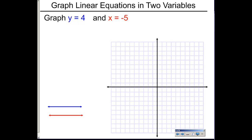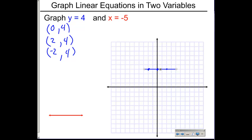Here we have two very special scenarios. The first equation, y equals four, does not have an x in it. What this tells us is that every point must have a y-value of four, so we fill in y as four. You can pick any x-values you want — let's pick zero, two, and negative two. Plotting (0,4), (2,4), and (-2,4) — you'll notice this ends up being a horizontal line. Anytime you have just y by itself equaling a number, you get a horizontal line.